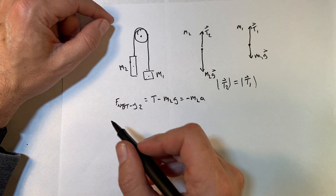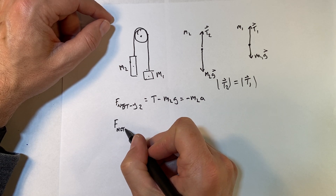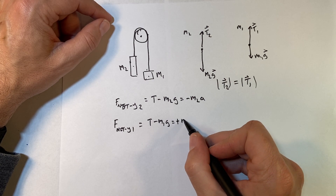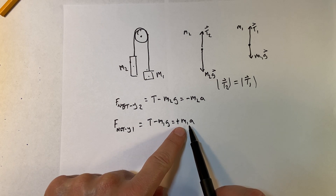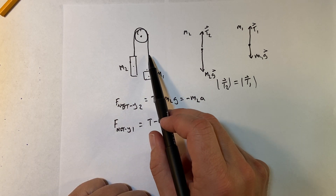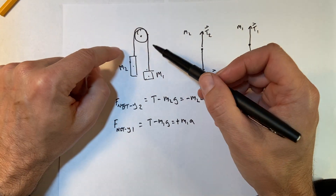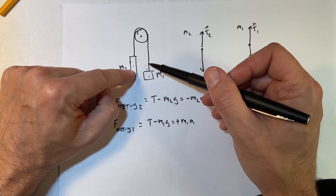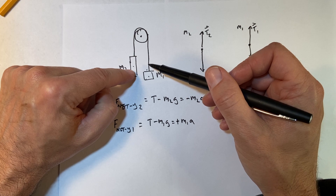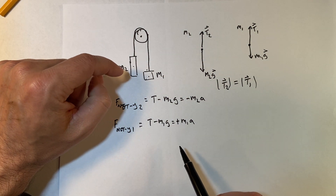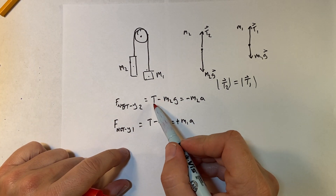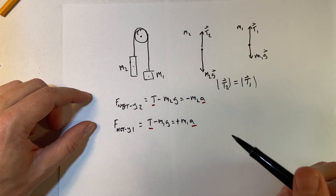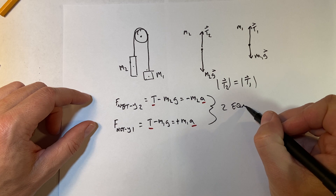If I do the same thing for the other object: F_net y1 equals t minus m1g, equals positive m1a. This one has a different mass and a positive acceleration because it's going to move up. These two accelerations have to be the same — if they were not the same, if this one accelerated down more than that one accelerated up, then the string would have to get longer or shorter, and that doesn't happen. We're assuming the string doesn't stretch. So that's why one is minus and the other is plus, but the a's are the same. Now I have two equations and two unknowns.